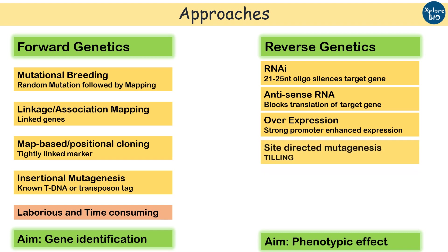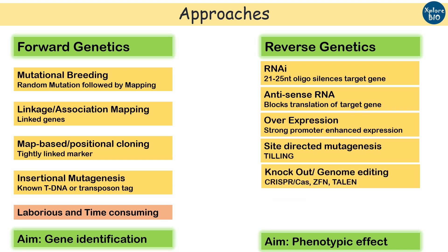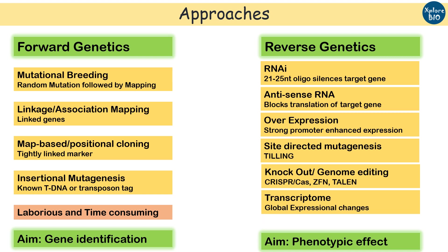Site-directed mutagenesis can be done using TILLING — targeting induced local lesions in the genome. Gene knockout or genome editing is performed using CRISPR-Cas, ZFN, and TALEN. Transcriptome analysis is also used, where you compare transcriptional levels between two samples. In all these approaches, you target a specific gene, alter its function or check its expression, and determine its phenotypic effect. These approaches become more convenient when whole genome sequence information is available.